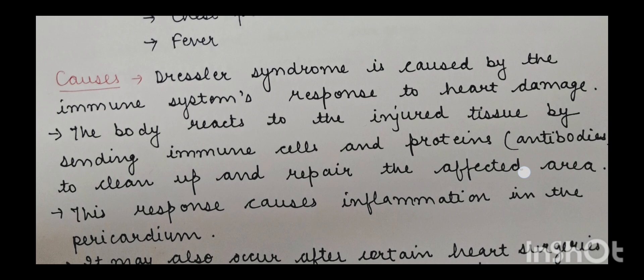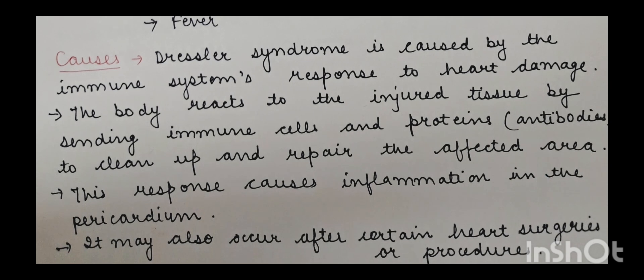The body reacts to the injured tissue by sending immune cells and proteins — that is, antibodies — to clean up and repair the affected area. This response causes inflammation in the pericardium. It may also occur after certain heart surgeries or procedures, after a myocardial infarction, or after trauma.